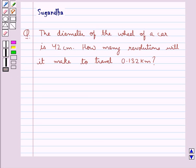Hello and welcome to the session. In this session we discuss the following question which says the diameter of the wheel of a car is 42 cm. How many revolutions will it make to travel 0.132 km?